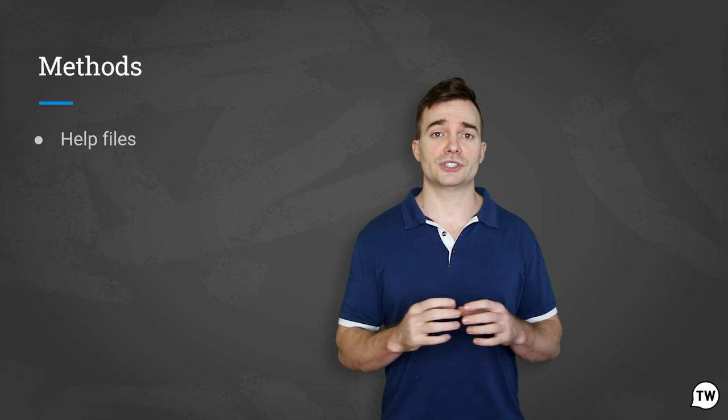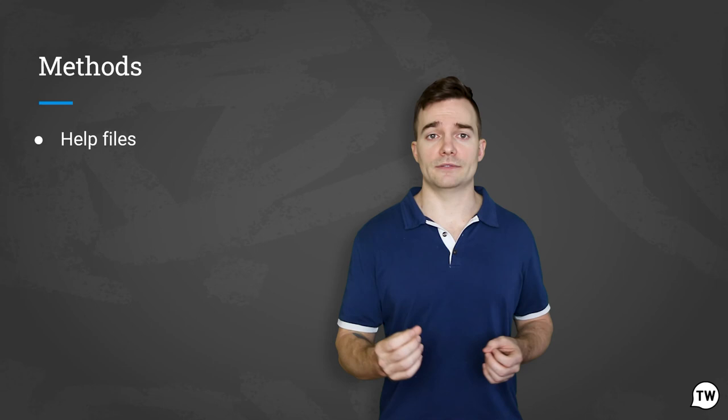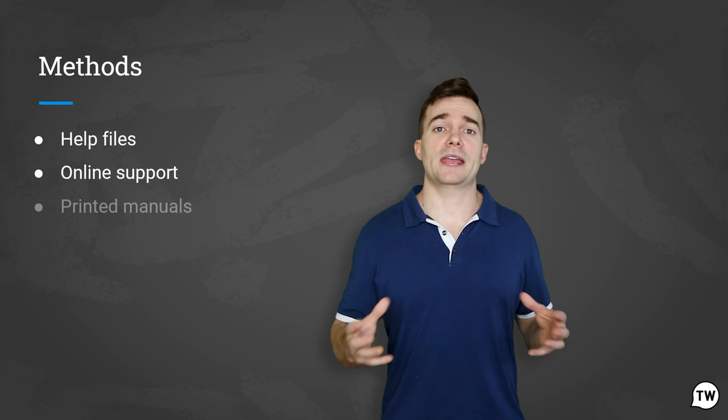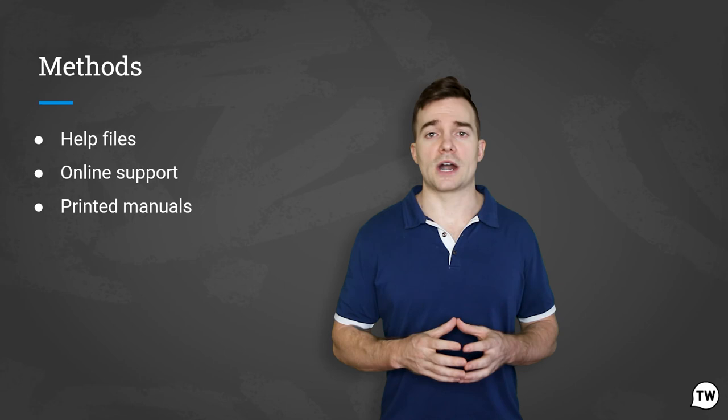Use the method which you think is most suitable. Help files should be very user friendly, fast, easy to use, and can be accessed offline. Online support offers a larger amount of information that can be accessed and updated from any device, and is often faster. Printed manuals are easy to find, you can browse through them, and they work even without a computer — they work best for out-of-the-box products, like furniture you're buying on Amazon.